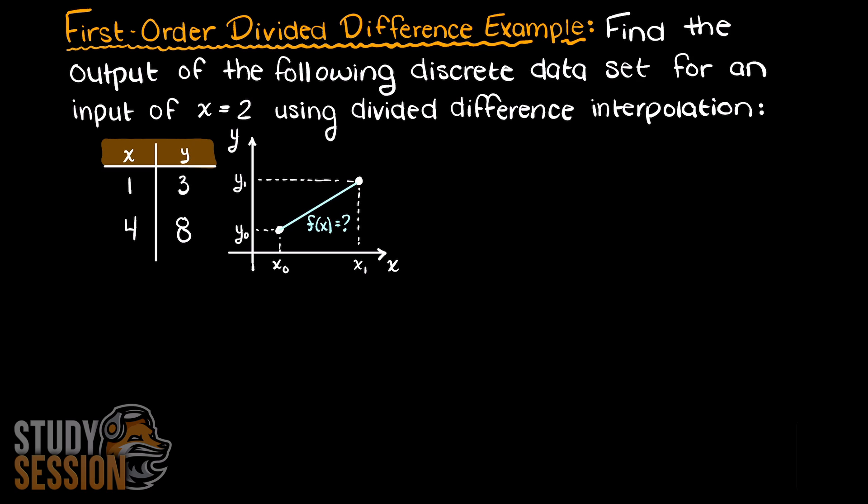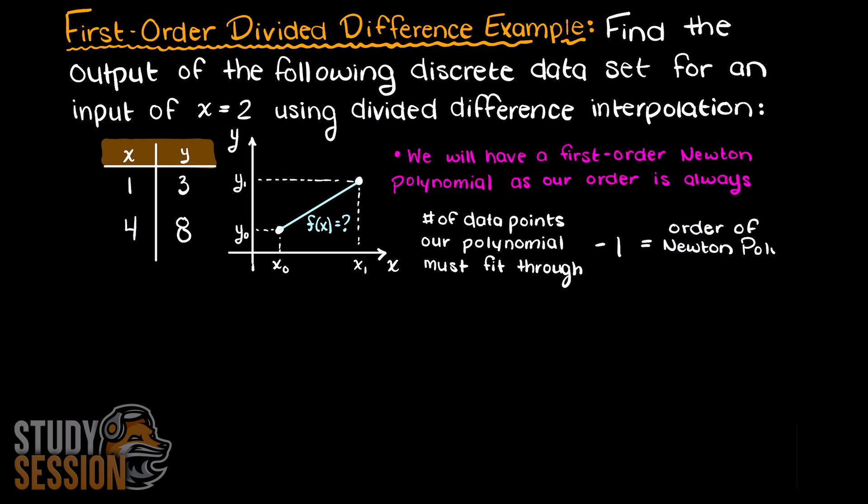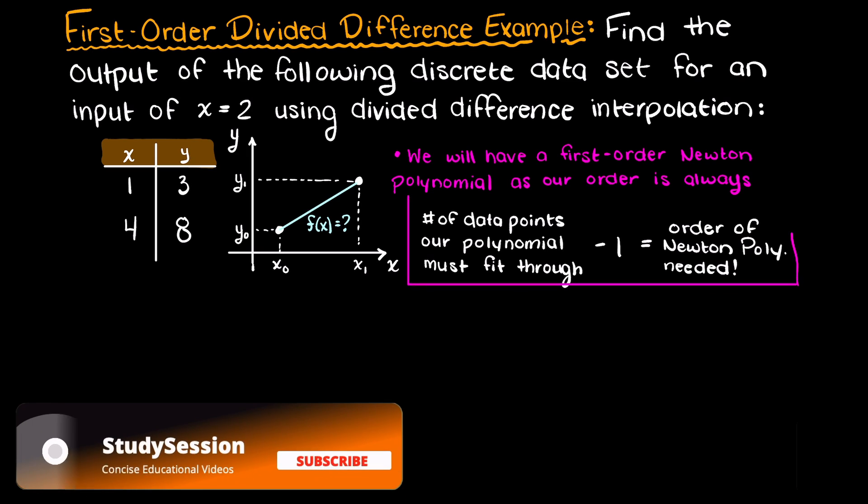The first thing we need to do when solving this problem is to determine what order Newton interpolating polynomial we will need. As we learned before, interpolating polynomials must always pass through every data point supplied to them. Therefore, our Newton polynomial will always be order of n minus 1. In this problem we are being asked to solve for a first order divided difference.